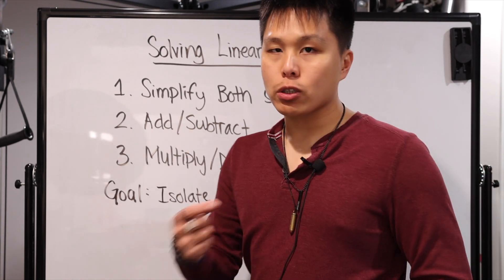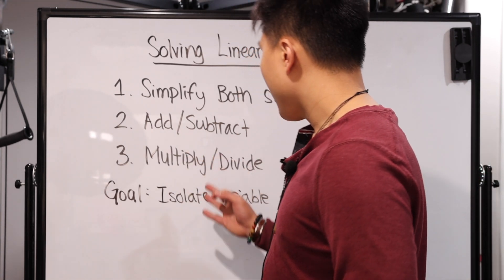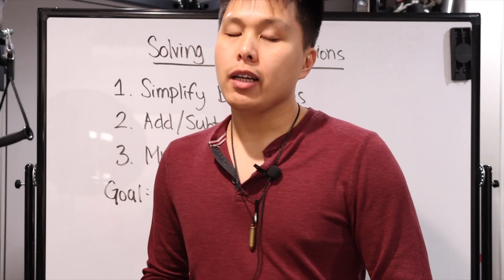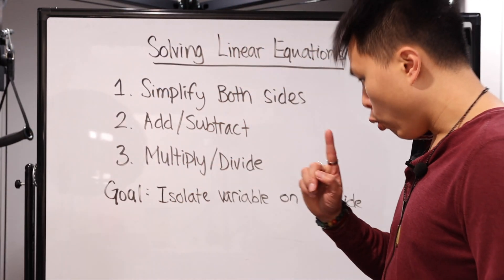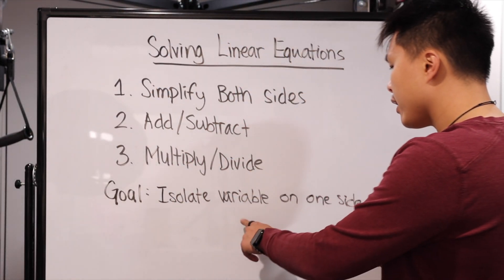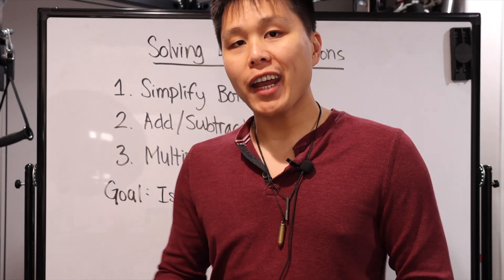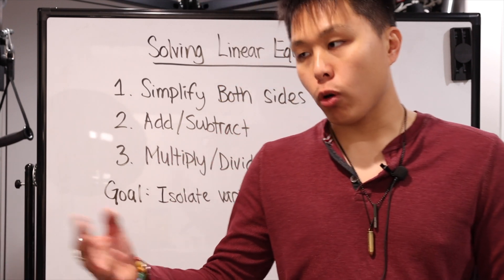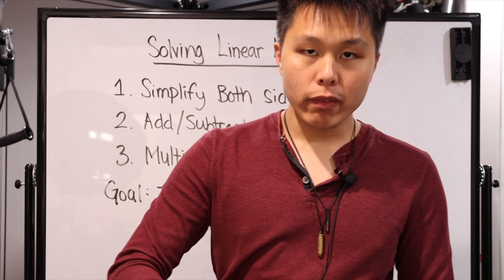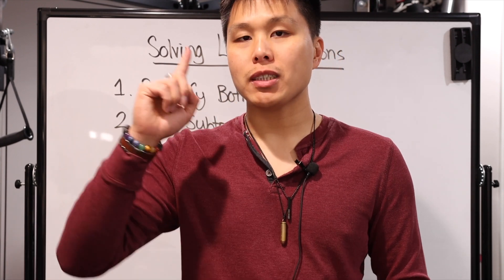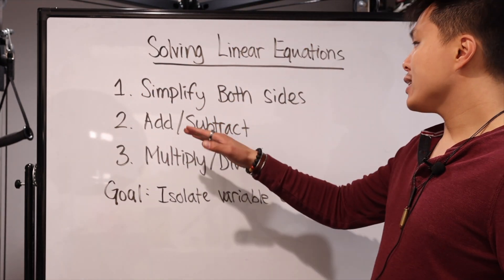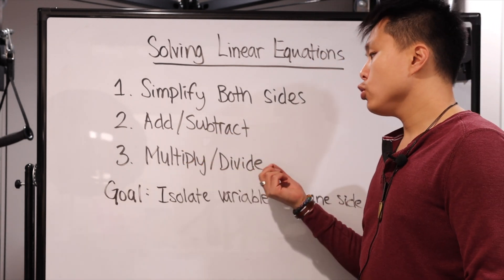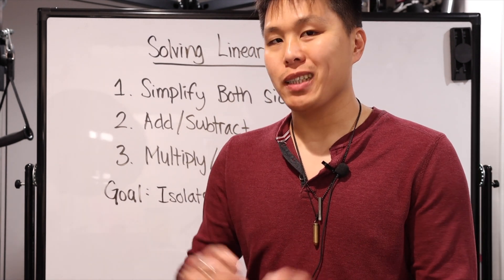The second step is you're going to add or subtract. The third one is you're going to multiply and divide. Now with these two steps, where you're adding or subtracting or multiplying and dividing, you're not doing it randomly — you have a goal. Your goal is always to isolate the variable onto one side. So if it's a positive number, you want to get rid of it by subtracting. If it's a negative number, you're going to add to bring it to the other side. What you do to one side, you must do to the other — you have to do it to both sides of the equation.